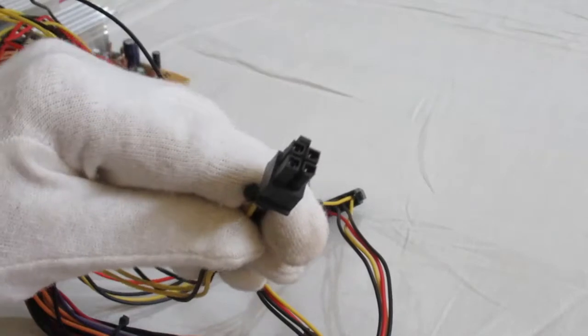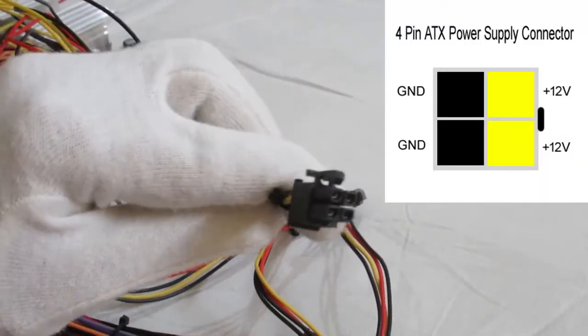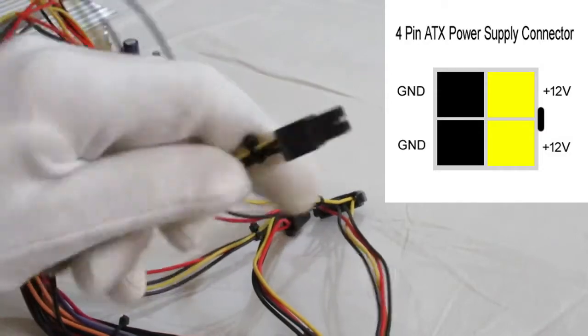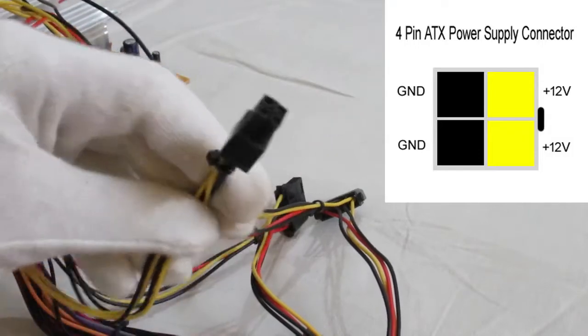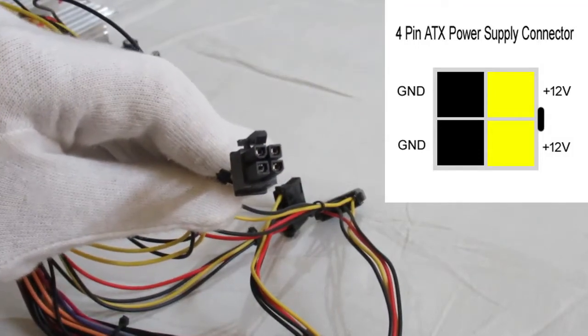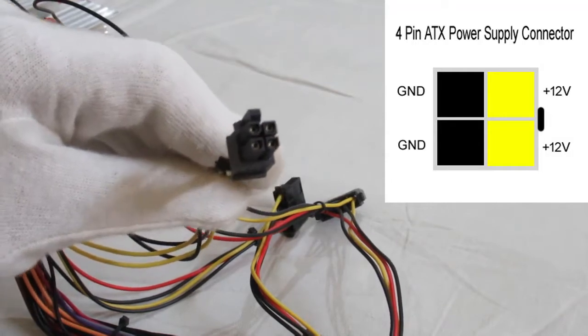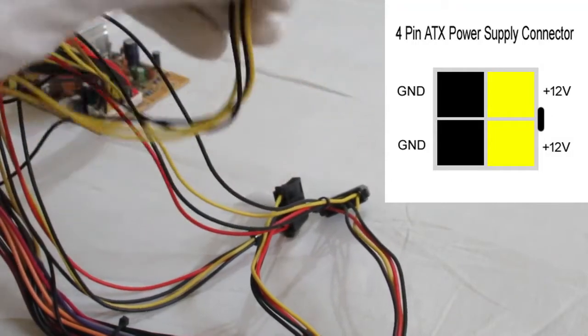And now let's talk about another connector. This is the 4-pin ATX plus 12V connector. It is also the most important connector of the SMPS. It gives plus 12V supply to the VRM section of the motherboard. Here VRM stands for voltage regulator module.